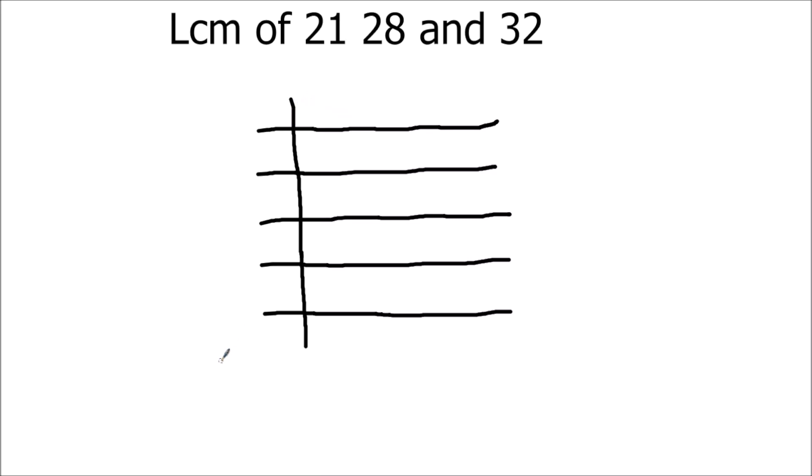Hello students, in this video we are going to learn how to find the LCM of 21, 28, and 32. The full form of LCM is Least Common Multiple, which means it is the number that divides all three numbers fully without leaving a remainder.